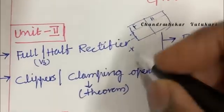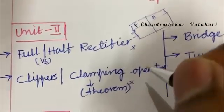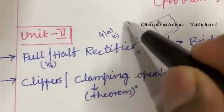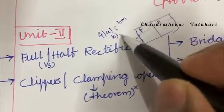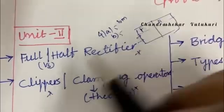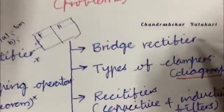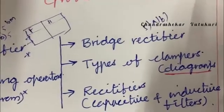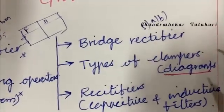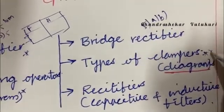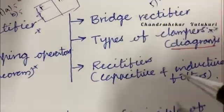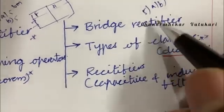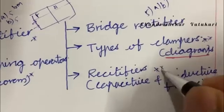The clippers and clamping operators and the theorem regarding clamping is the topmost question. Question number 4AB, do not expect direct 10 mark. It is a combination of 5-5 split all the time. Clippers may be the short question. Bridge rectifier may be occurring in 5AB. All rectifier diagrams to be worked out only in pencil. Types of clampers along with its diagrams is also the topmost question. Rectifiers related to capacitive or inductive filters may be the short or long question this time.